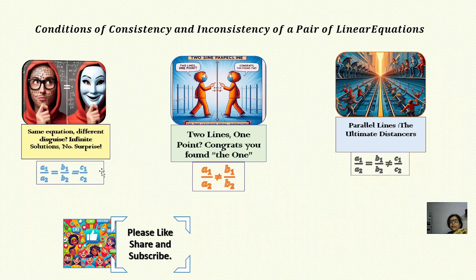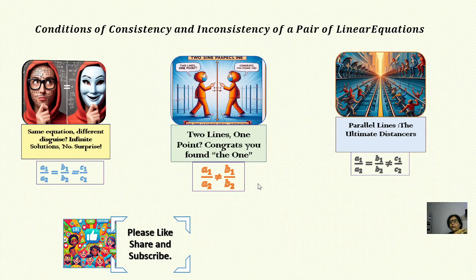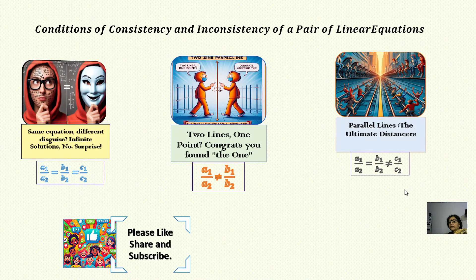Under the category of consistency, we have two conditions. One condition where all the ratios — a1/a2 = b1/b2 = c1/c2 — means the lines completely coincide with each other and have infinite solutions. The second condition is a1/a2 ≠ b1/b2, where the lines intersect at exactly one point and have a unique solution.